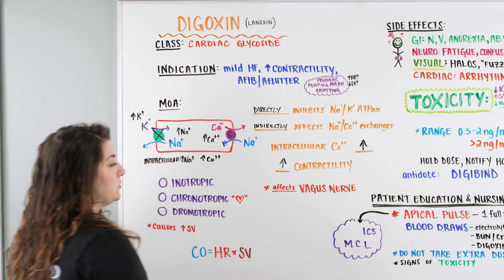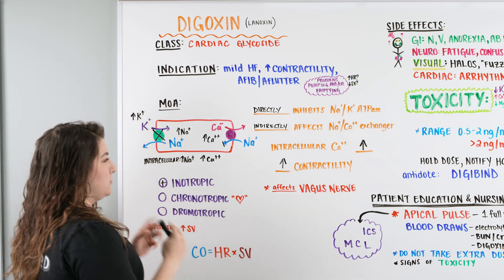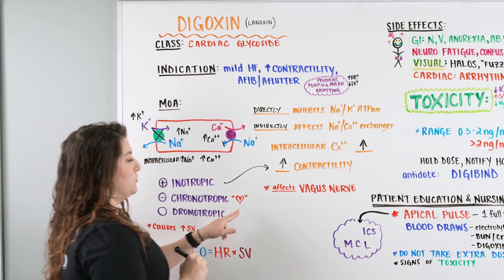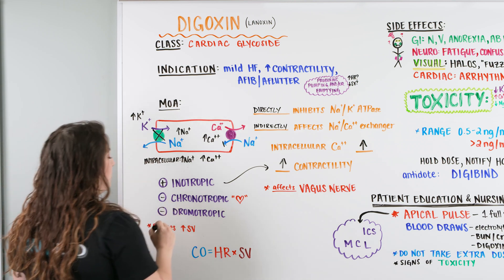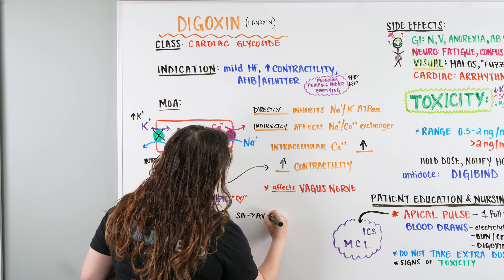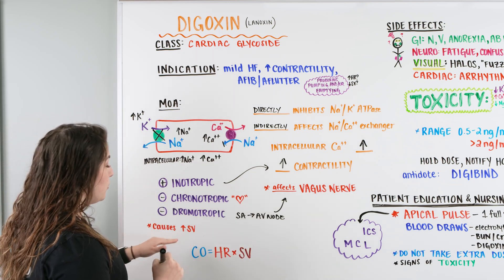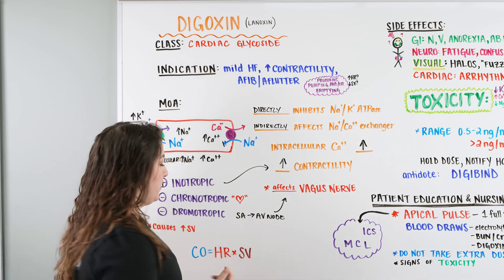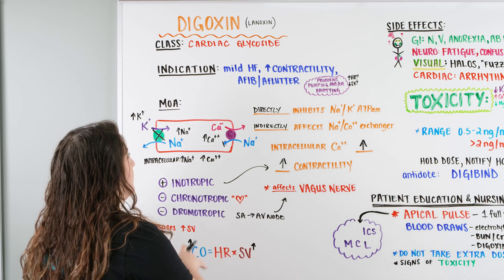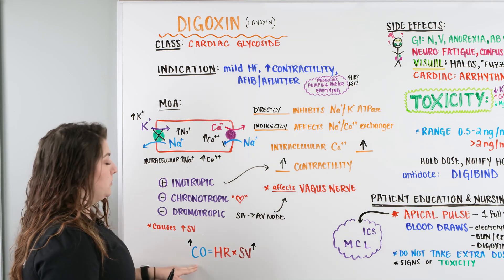Digoxin can also affect the vagus nerve. This gives us a positive inotropic effect — an increase in contractility — a negative chronotropic effect, meaning it slows the heart rate, and a negative dromotropic effect, slowing conduction from the SA to the AV node. This results in an increase in stroke volume, which increases cardiac output (heart rate × stroke volume), which is critical for patients with AFib or heart failure who are not emptying as effectively as needed.